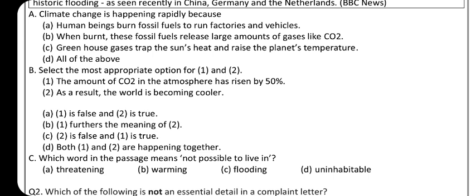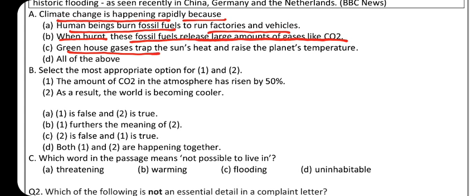Question number 1: Climate change is happening rapidly because — human beings burn fossil fuels to run factories and vehicles; when burnt, these fossil fuels release large amounts of gases like CO2; greenhouse gases trap the sun's heat and raise the planet's temperature. So all three reasons are correct, and the answer is option D: All of the above.